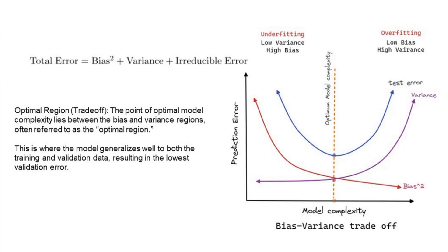Whenever possible in an interview, please draw this graph and explain it. This is a graph of prediction error versus model complexity. Bias reduces as model complexity increases, whereas variance increases as model complexity increases. The optimal trade-off is achieved when both are low. The first portion — high bias, low variance — is known as the underfitting region. The second portion — high variance, low bias — is the overfitting region. Somewhere in between is the optimal model complexity, where both errors are least and we get the least total error.